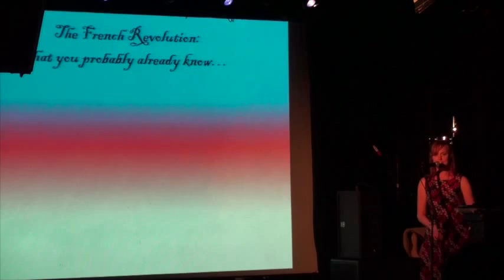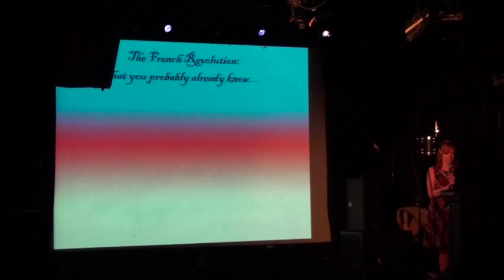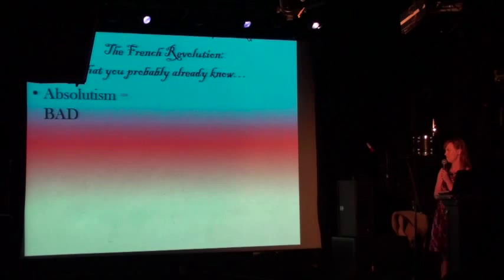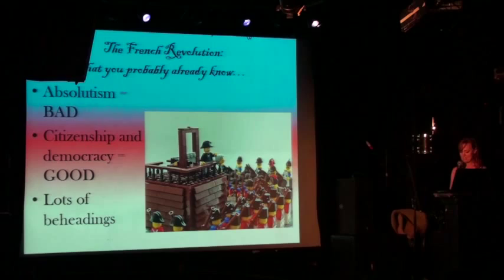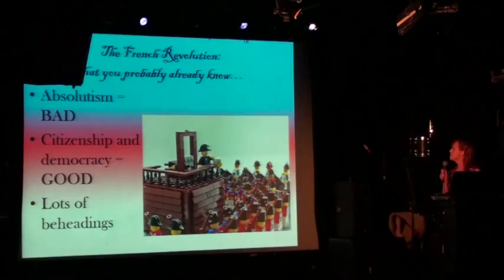So this is things you probably already know or remember about the French Revolution from high school. Absolutism was bad, like kings, that sort of thing. Citizenship and democracy are good, and there were lots of beheadings. And this is, I'm sure it's self-evident, but just in case, that is of course a rendering of the beheading of Louis XVI in Legos.